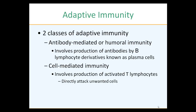An important point: B lymphocytes are phagocytic cells. In addition to their ability to become plasma cells and produce about 2,000 antibody particles per second before dying, they also act as phagocytic cells. This is very important because B cells can themselves be antigen-presenting cells, which we'll discuss as we proceed.